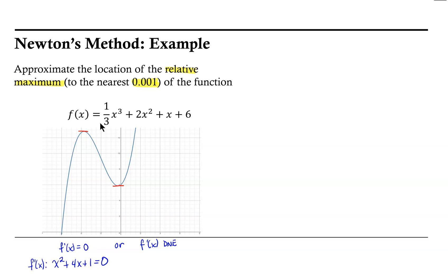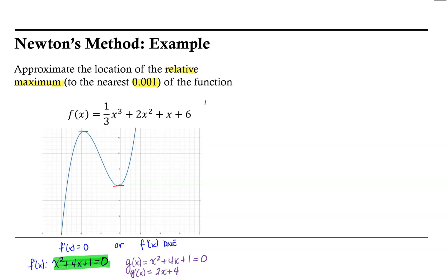Let's get started. The function we want to find the zeros of is the derivative x² + 4x + 1. To avoid confusion, we'll relabel it g(x), and we want to find where g(x) = 0. Using Newton's method, we'll also need g'(x), which is 2x + 4. Let's set up a table to iterate and collect all the information we need.